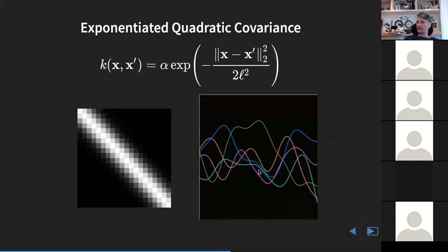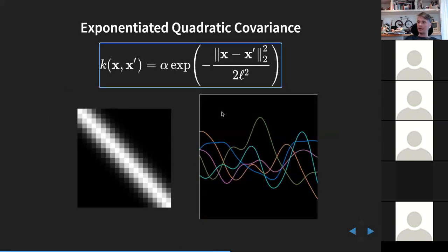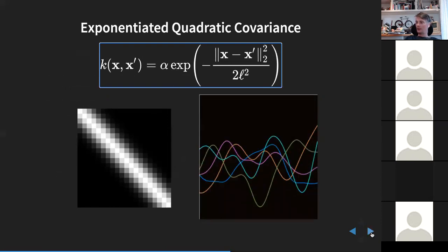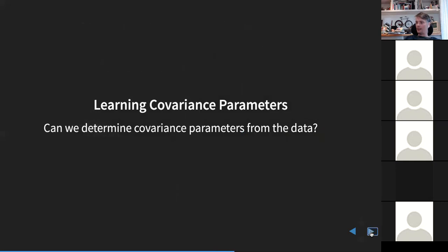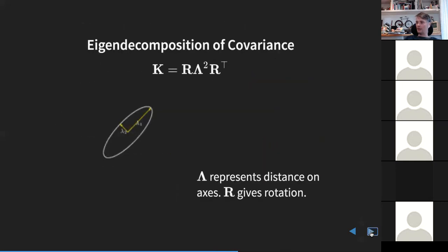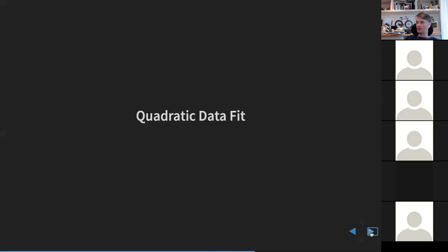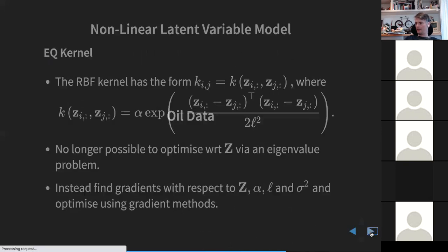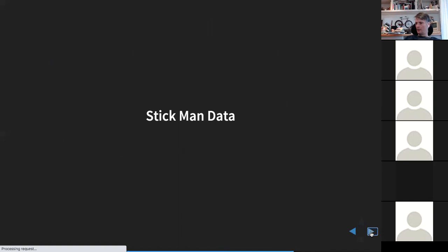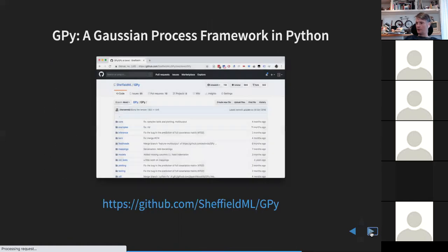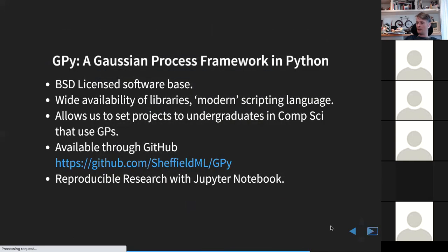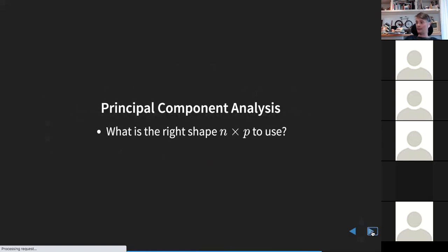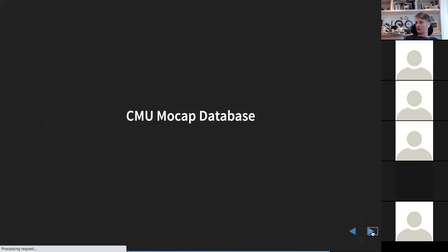Instead of k = ZZ-transpose plus sigma-squared I, we substitute a general Gaussian process kernel. We can no longer optimize this analytically — gradient descent methods are needed — but we now have a non-linear approach to fitting these models. There's a squared exponential covariance function that is widely used, and GPy software implements the GP-LVM so you can experiment with it.